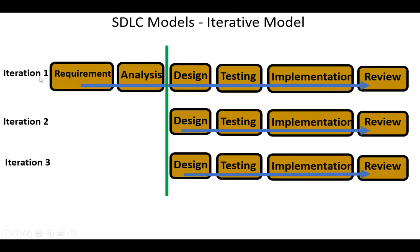Iteration 1 is considered a basic iteration and should include all the phases of the software development lifecycle. The review phase is usually performed after the product deployment. It is used to check the behavior and validity of the developed product.